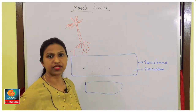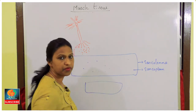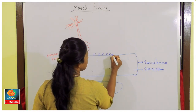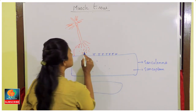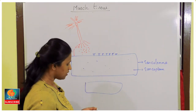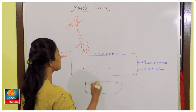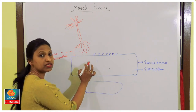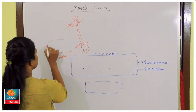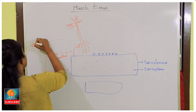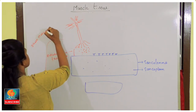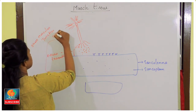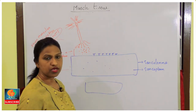There are specific receptors on the surface of the muscle membrane for each neurotransmitter. The gap between the neuron and the muscle where these chemicals are released is called the neuromuscular junction (NMJ).